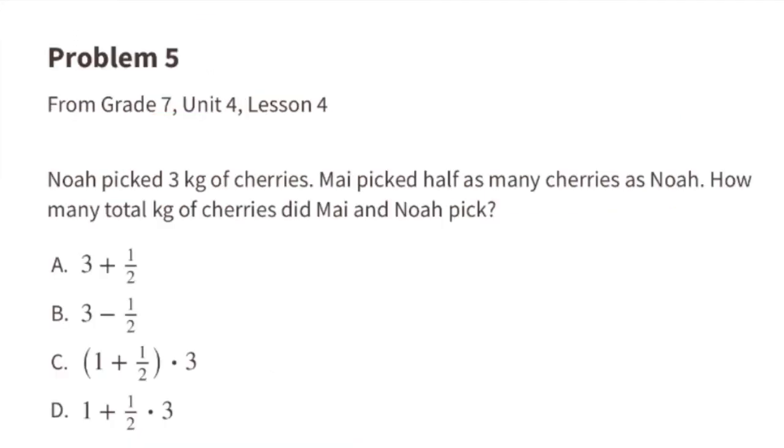Problem number five, from seventh grade Unit 4, Lesson 4: Noah picked 3 kg of cherries. Mai picked half as many cherries as Noah. How many total kilograms of cherries did Mai and Noah pick? First let's find the answer, then we can decide which of these four expressions represent the correct amount. The information tells us that Noah picked 3 kg of cherries and Mai picked half as many cherries as Noah, so that could be represented as 3 plus half of 3, or 3 plus 1.5. Since 3 plus 1.5 equals 4.5, we're looking for the expression equivalent to 4.5.